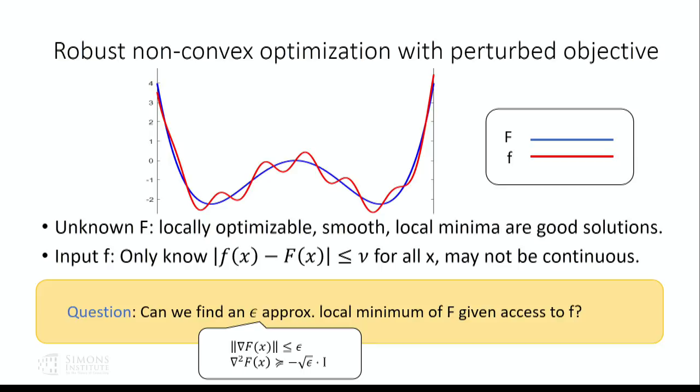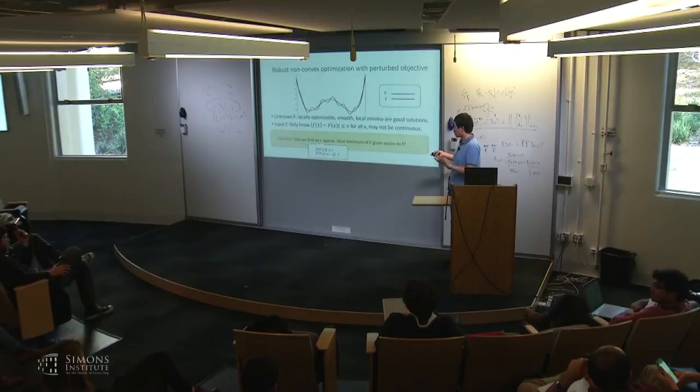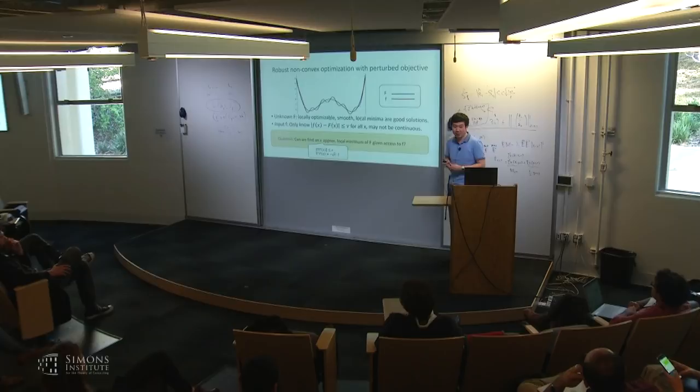Audience question: If you convolve with some small function, would that work? That's actually exactly what we do, but to make that work with optimal parameters you need to be a little bit more careful.